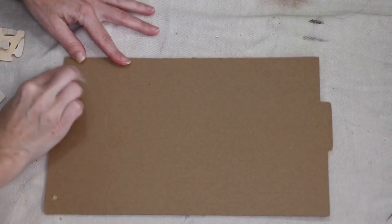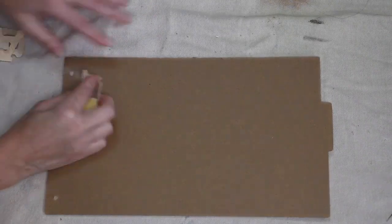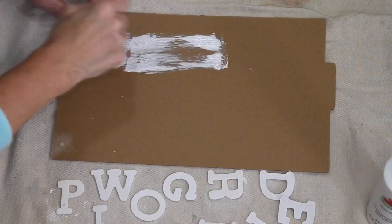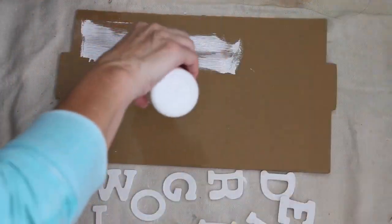You do need to give that some time to set up and dry, but once it does set up and dry, you do go in with just a light sandpaper and sand that flat. And then after you have sanded that, you can go in and you will paint it with your white acrylic paint.